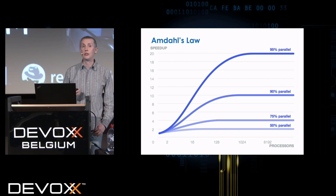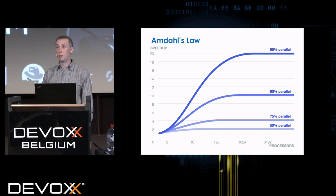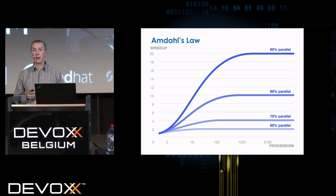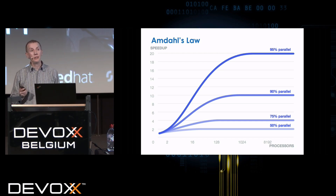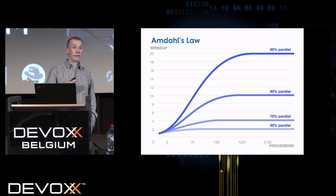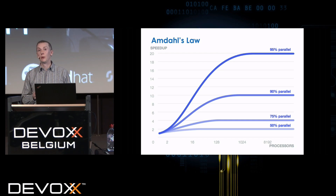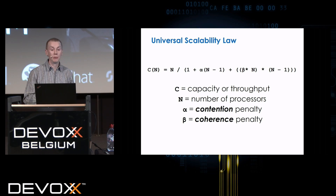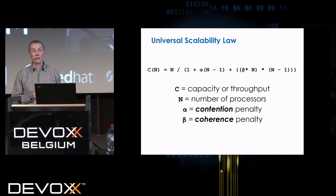Going parallel — if you have any contention at all — becomes a limiting factor very, very quickly. This is Amdahl's argument: he didn't want you buying mid-range computers because he didn't believe it was easy to program for them. But from a real-world perspective, when Neil Gunther was at Xerox PARC looking at parallel computing, he was finding you couldn't even get close to Amdahl's scale-up predictions. He dug into it more, and as a result came up with something called Universal Scalability Law — a slightly scary formula, but not that difficult when you get your head around it.